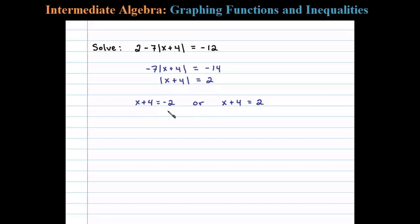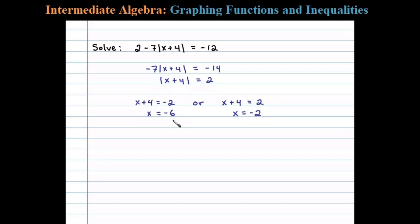Now we can solve each one of these linear equations separately. Here we just subtract 4 on both sides, and that gives us x equals negative 6. Subtracting 4 on both sides of the second equation, we have x equals negative 2. So negative 6 and negative 2 are the two solutions.